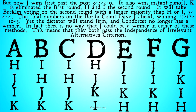The final numbers on the Borda count leave J ahead, winning 15 to 12 to 10 to 5. Yet the dictator will stand firm — even with J moved around, H will still win for the dictator. And Condorcet no longer has a winner. But remember: when Condorcet doesn't declare a winner, that doesn't mean everyone's a winner — it means no one is. So a non-winner hasn't become a winner; J hasn't become a winner. There's no way J could be a winner in either of these methods, meaning both pass the Independence of Irrelevant Alternatives criterion.